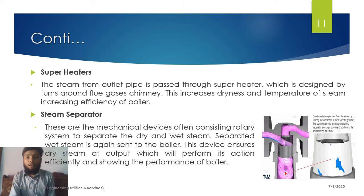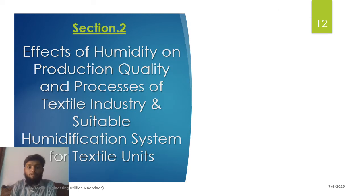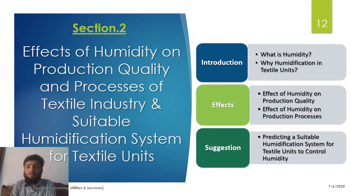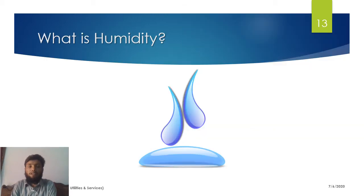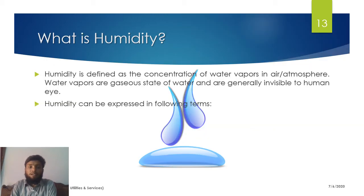Moving to Section 2, titled: Effect of Humidity on Production Quality and Processes of Textile Industry, and Suitable Humidification Systems for Textile Units. The contents of this section are: introduction, effects, and suggestions. Humidity is defined as the concentration of water vapor in the atmosphere — water vapor being the gaseous state of water, invisible to the human eye.